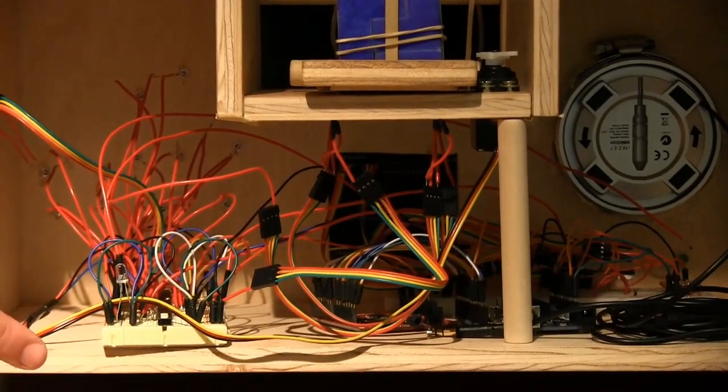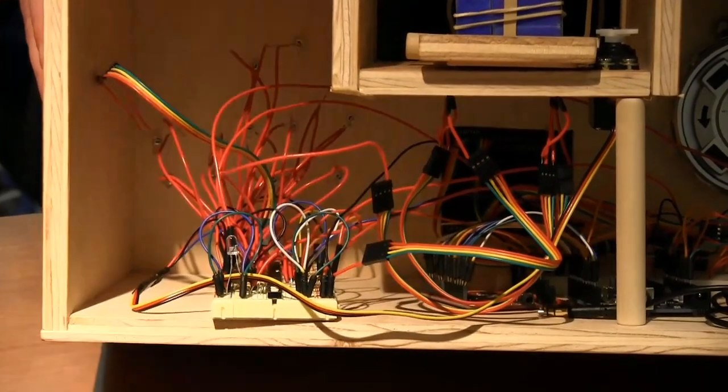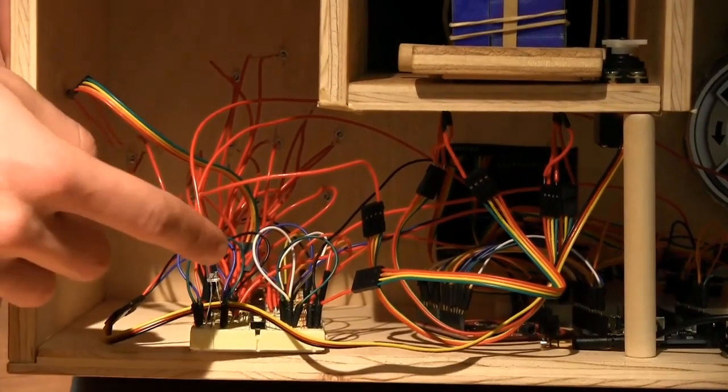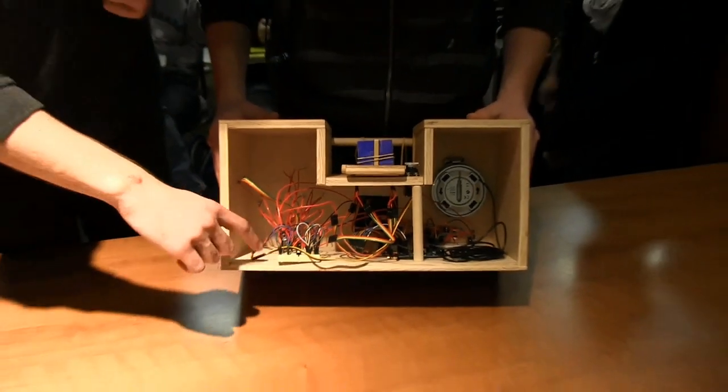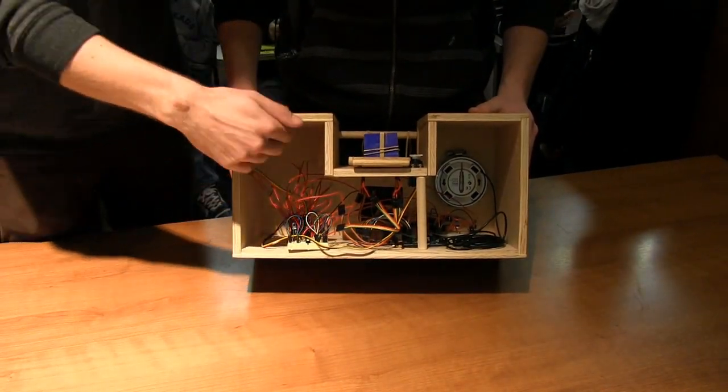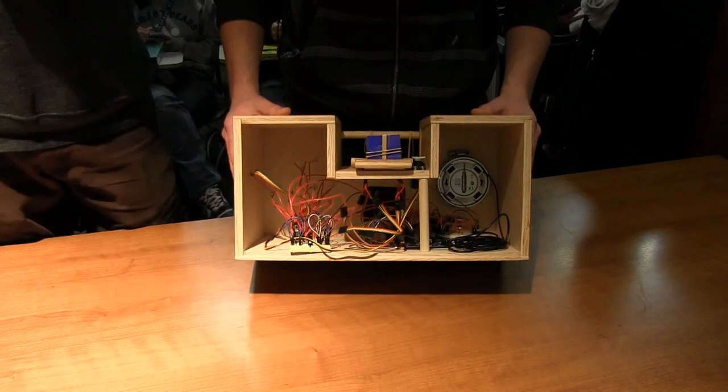And then this board here houses our two PICs. This first one here does the motor communication to the two different positions and sends a signal to and from the Arduino to begin that movement. And then it also will send a signal to the second PIC over here that will begin the LED sequence here on the front wall, as well as controlling the two LCDs over there on the front wall.